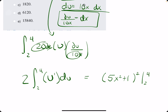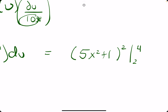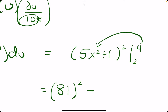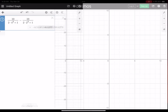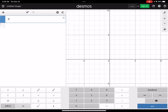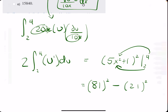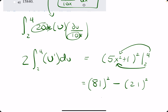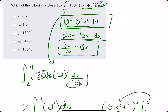We have this evaluated from 2 to 4. Plugging in 4: 5 times 4 squared is 5 times 16, which is 80, plus 1 gives us 81, all squared. Minus the 2 evaluation: 5 times 2 squared is 5 times 4 is 20, plus 1 gives us 21 squared. So we have 81 squared minus 21 squared, and we get 6120 as our final answer — looks like option D.